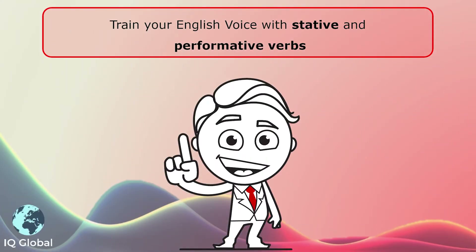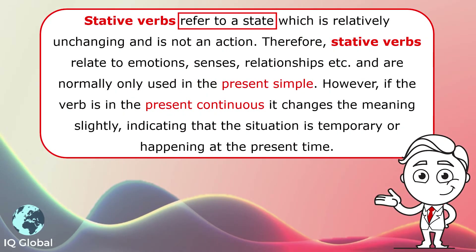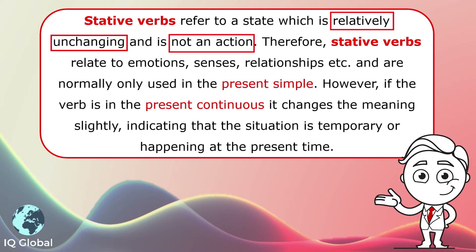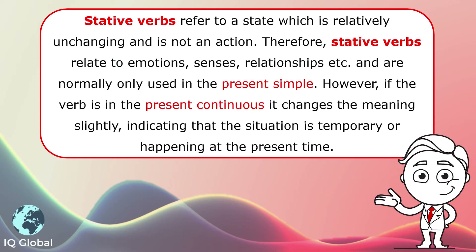We're going to look at how we use stative and performative verbs. Stative verbs refer to a state which is relatively unchanging and it's not an action. Therefore, stative verbs relate to emotions, senses, relationships and so on. They are normally used in the present simple.